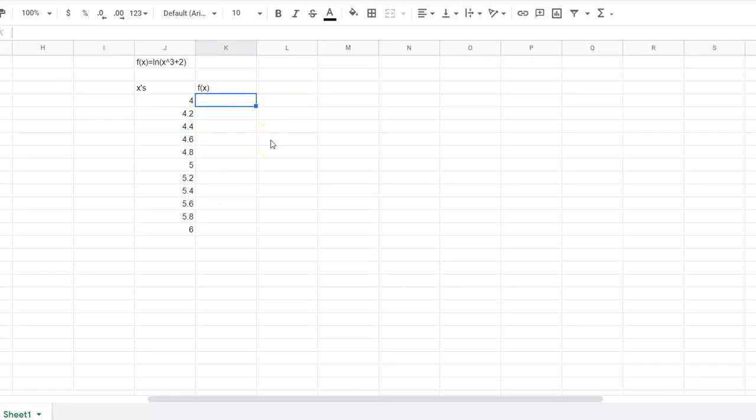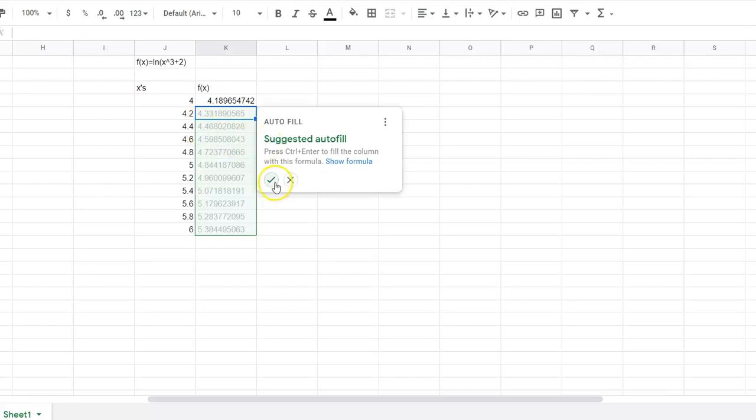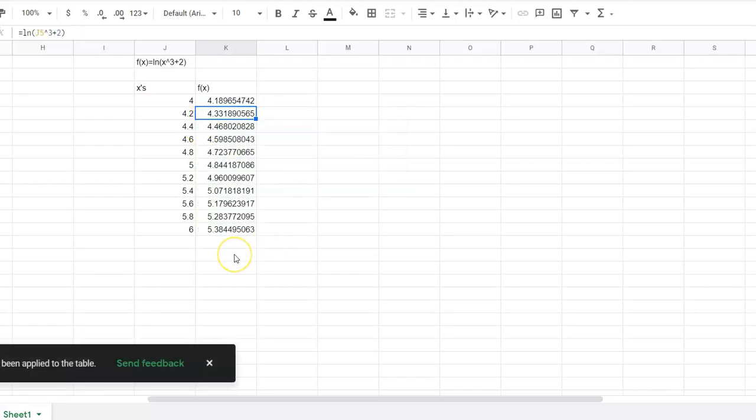And now my f of x is going to be equal to natural log parentheses. And I'm going to go to that cell that that 4 was in, take that to the third power, plus 2, close parentheses, let it autofill. There's all my output values. And now I'm going to sum all of those output values in that column of f of x. And I get some sum.